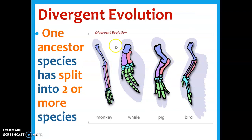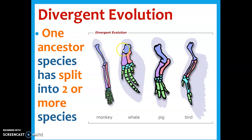Divergent evolution is kind of where one ancestor has split into two or more species. There's probably been a mammal ancestor that spread out, and now we have all these different types of mammals. If you look at these bones - radius and ulna, the humerus, the phalanges, the carpals - same thing in our hands, and in a pig, and in a bird's wings too. This would be like the thumb of the bird, which is weird to think about.